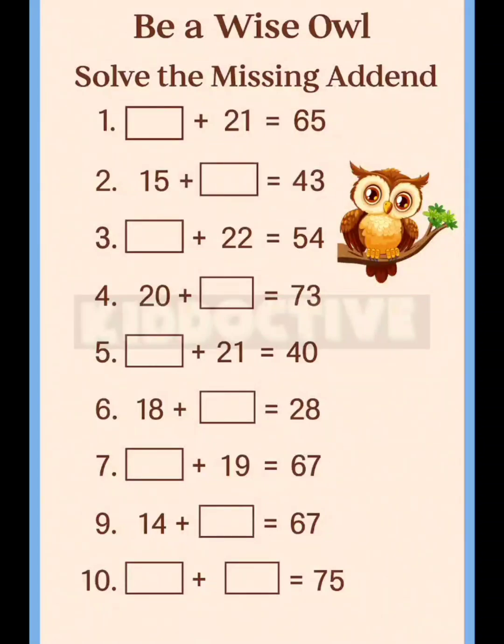Today we are going to solve this worksheet. Solve the missing addend. The first question is dash plus 21 equals 65. What is that number we are going to add with 21 to get 65? When we add something, we get the bigger number. 65 is the bigger one.